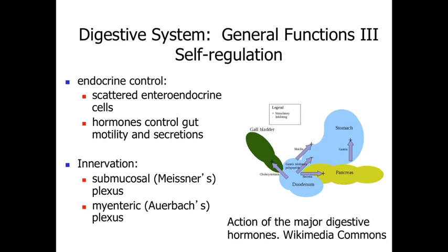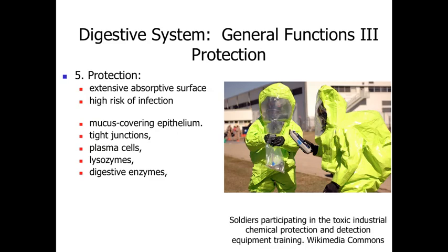We're also going to have innervation — two autonomic nerve plexuses. We're going to have cell bodies located either in the submucosal plexus, underneath a region called the submucosa, or the myenteric plexus, where autonomic nerve cells are found in between the layers of smooth muscle within the walls of the digestive tract. This allows the digestive tract to respond to what's going on within the lumen.